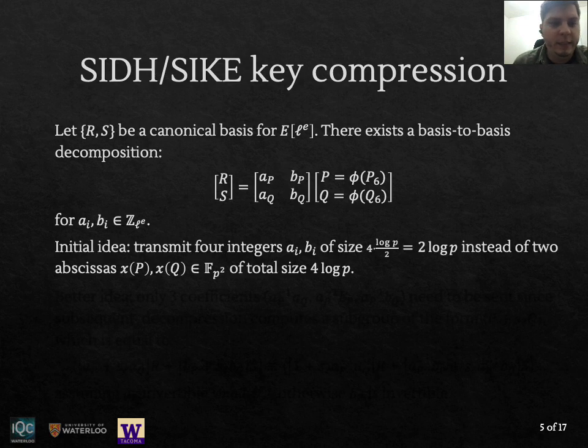The first idea for key compression was given by Azarderakhsh and others where instead of transmitting the x-coordinates of points P and Q to represent those points which have storage log p, we can actually transmit these four coefficients that are the representations of P and Q in terms of that canonical basis so everyone can recover P and Q. And these coefficients are just half the bit length of the prime p. So in total only 2 log p would be transmitted.